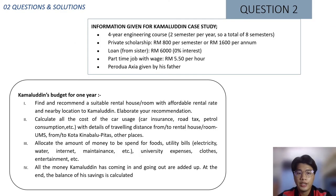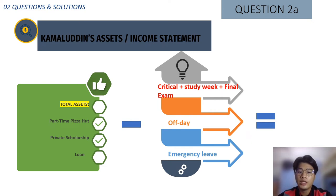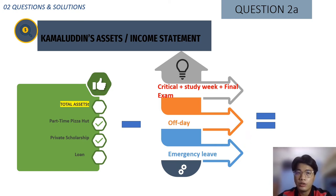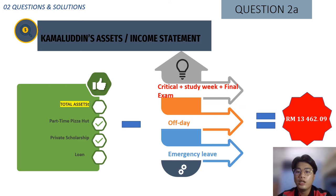Moving on to question 2, which is about Kamaluddin's budgeting and total assets. Kamaluddin's income comes from part-time work at Pizza Hut, a private scholarship, and a loan. During critical week, study week, and final exam periods he does not work, and he has around one day off each week plus seven days of emergency leave during the year. The total income for Kamaluddin is 13,462 ringgit and 9 cents.